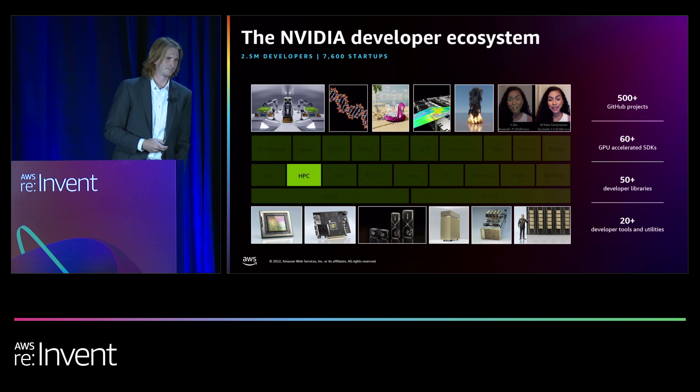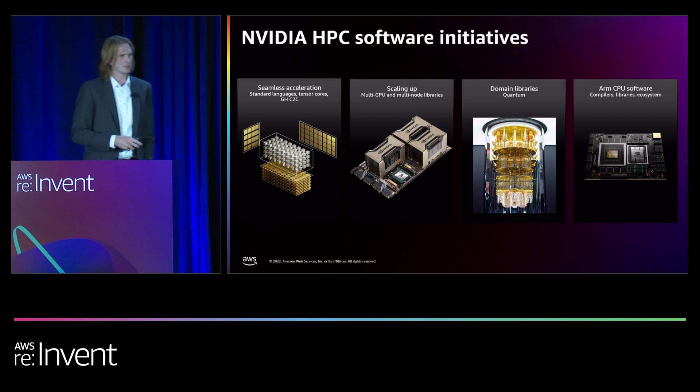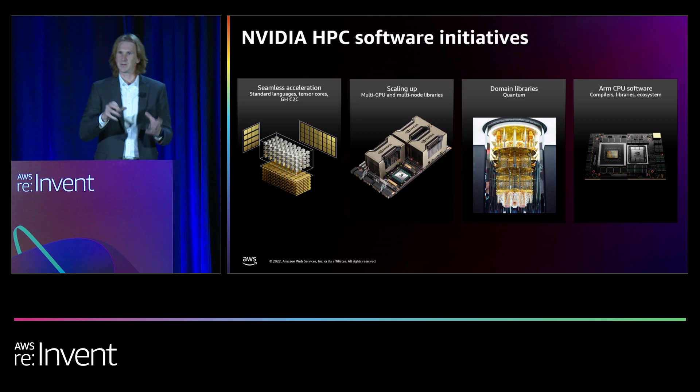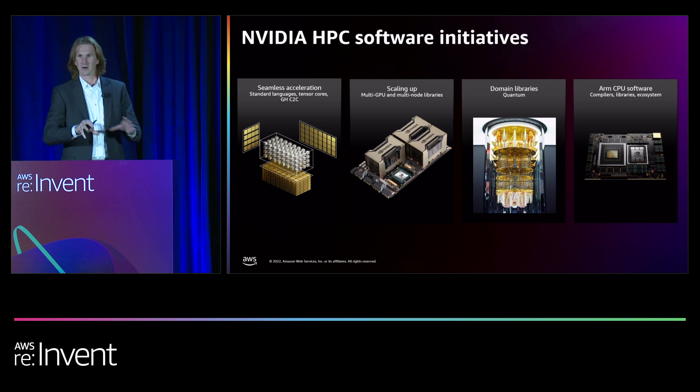Within HPC, NVIDIA has a lot of initiatives. We have our accelerated computing initiatives taking advantage of the power and energy efficiency of GPUs and the tight integration of CPUs and GPUs. You may have seen NVIDIA Grace and Grace Hopper — this is where we're advancing the state-of-the-art in CPU-GPU platforms. We also scale these solutions to large multi-GPU nodes and build them into enormous, tightly integrated multi-node systems with libraries and software to program them.